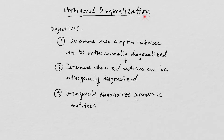This is a video about orthogonal diagonalization of symmetric matrices. There are three objectives: determine when complex matrices can be orthonormally diagonalized, determine when real matrices can be orthogonally diagonalized, explain the difference between orthogonal and orthonormal diagonalization, and then orthogonally diagonalize symmetric matrices via examples.